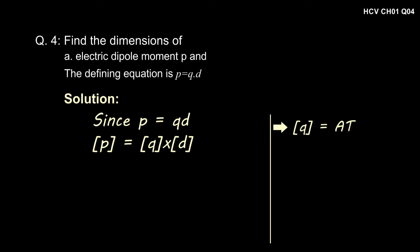In order to find the dimension of electric dipole moment P, we use the equation given in the question: P = Q × D, where P is electric dipole moment, Q is charge, and D is the separation between the charges.